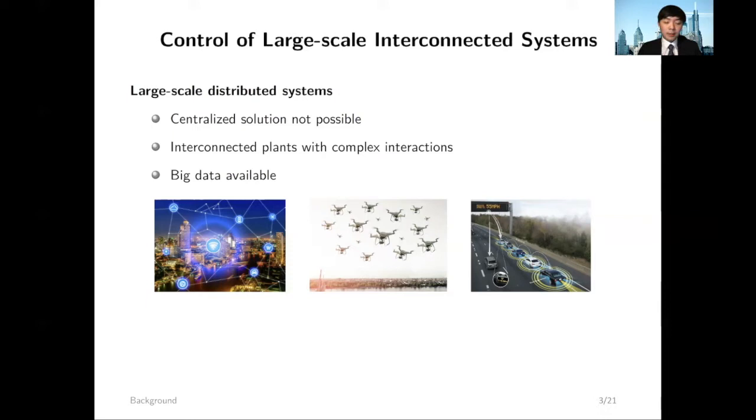When designing distributed control policies, you need to consider the interactions between different autonomous agents, and such interactions can be very complex to handle. Finally, in such applications, there is big data readily available. The remaining question for control engineers is how to use this big data to improve the safety and performance of closed-loop systems.